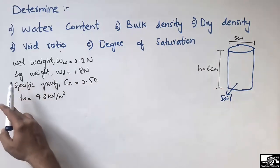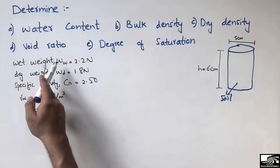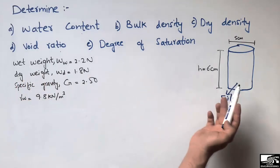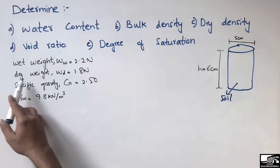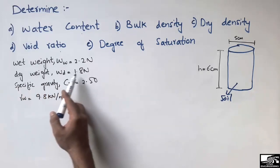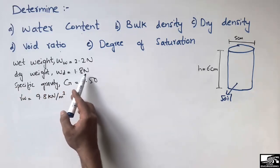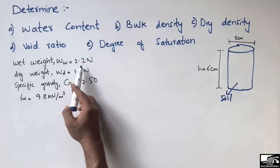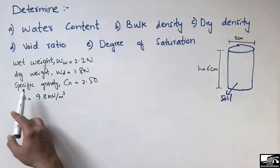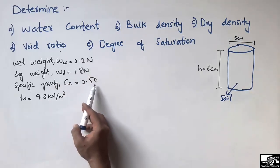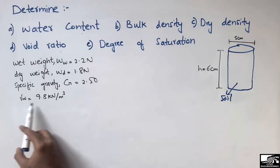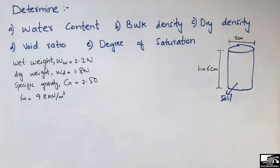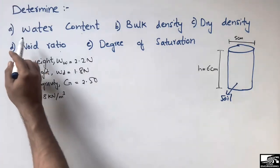We are given the known data. The weight of the soil sample in wet condition is 2.2 Newton. After putting it in an oven, the dry weight of the soil sample comes out to be 1.8 Newton. The specific gravity of the soil sample is 2.50, while the unit weight of water, known from standards, is 9.8 kilonewton per cubic meter.